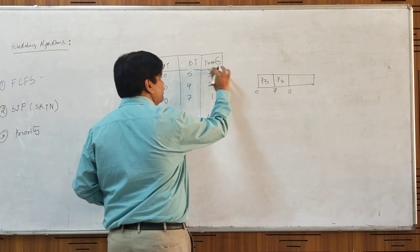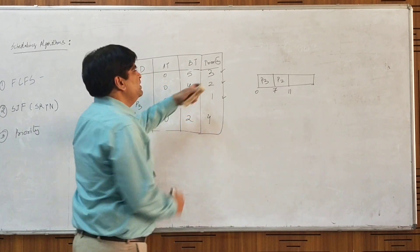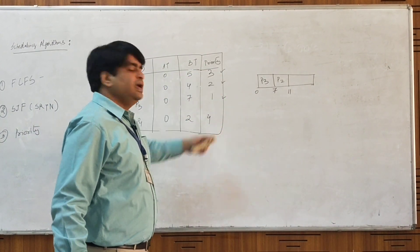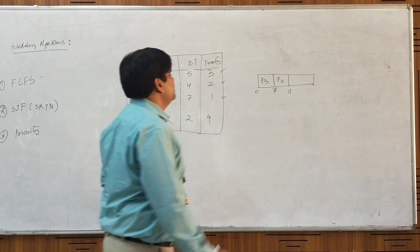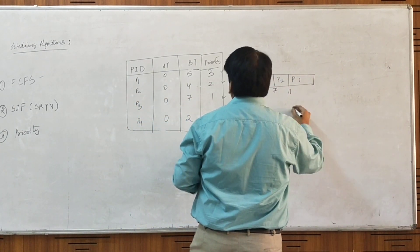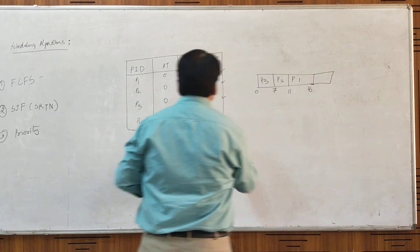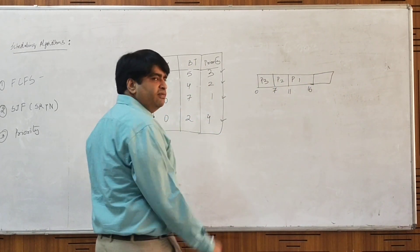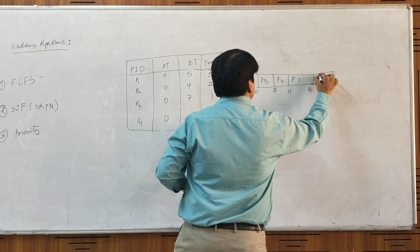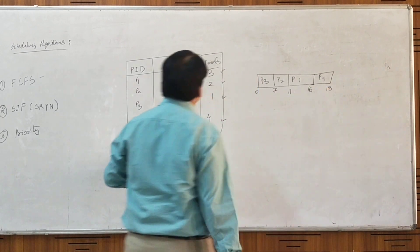After P2 completes, we have only P1 and P4 remaining. P4 has priority 3 and P1 has priority 4, so P4 is scheduled next from 11 to 13 (burst time 2). Then P1, which has the lowest priority, is scheduled from 13 onwards. P1 has a burst time of 5, running from 13 to 18. This completes the Gantt chart for priority scheduling.